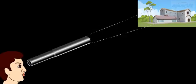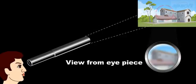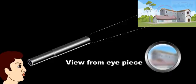Point the objective lens of the telescope at a distant object. Focus by sliding the small tube in or out of the large one.